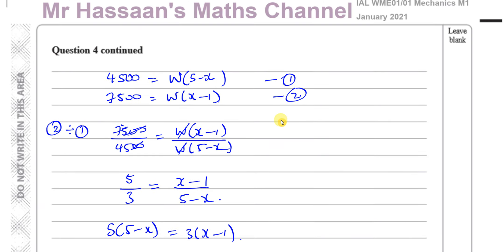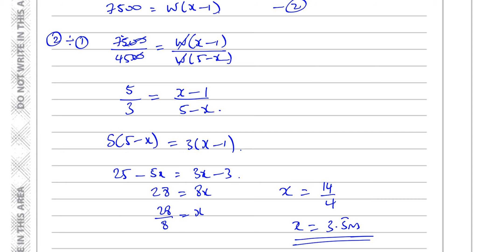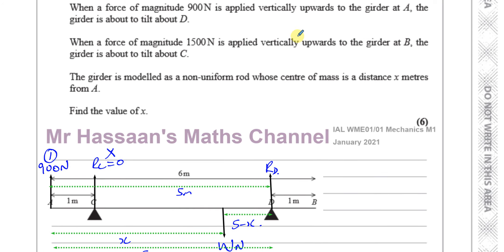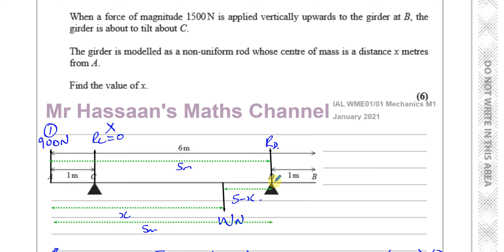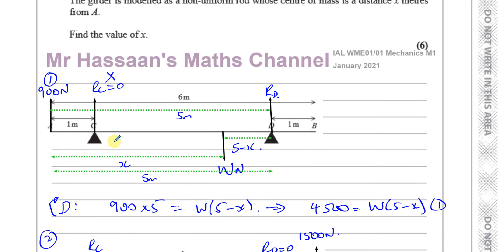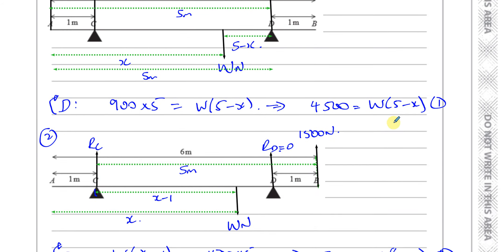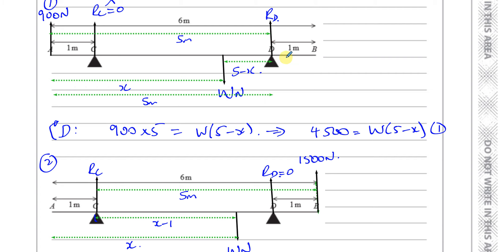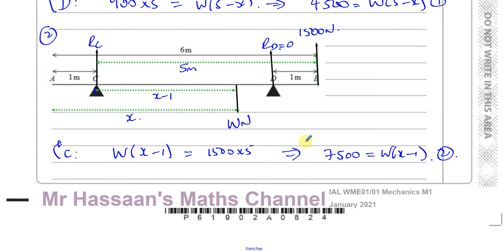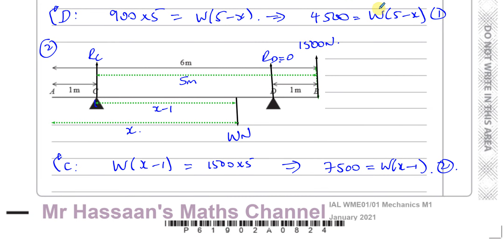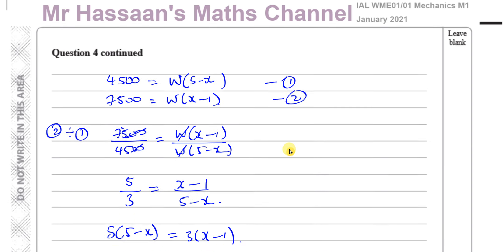So x equals 3.5 meters — the distance from A to the center of mass. Two key points to remember: when it says 'about to tilt about D,' the other support has a zero reaction force — that's the key to answering this question, otherwise you have too many unknowns. Also, it's crucial to express all distances in terms of the same variable x, so that W and x in both equations refer to the same quantities when solving simultaneously.